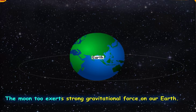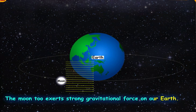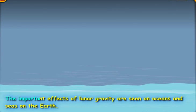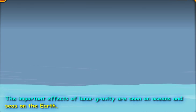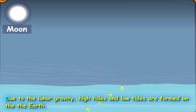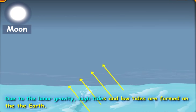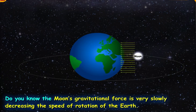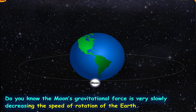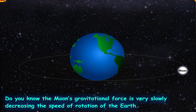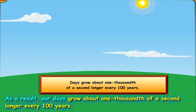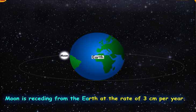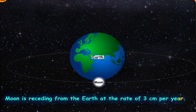The moon too exerts strong gravitational force on our Earth. The important effects of lunar gravity are seen on the oceans and seas on the Earth. Due to the lunar gravity, high tides and low tides are formed on the Earth. Do you know, the moon's gravitational force is very slowly decreasing the speed of the rotation of the Earth. As a result, our days grow about one-thousandth of a second longer every 100 years. Moon is receding from the Earth at the rate of 3 centimeters per year.